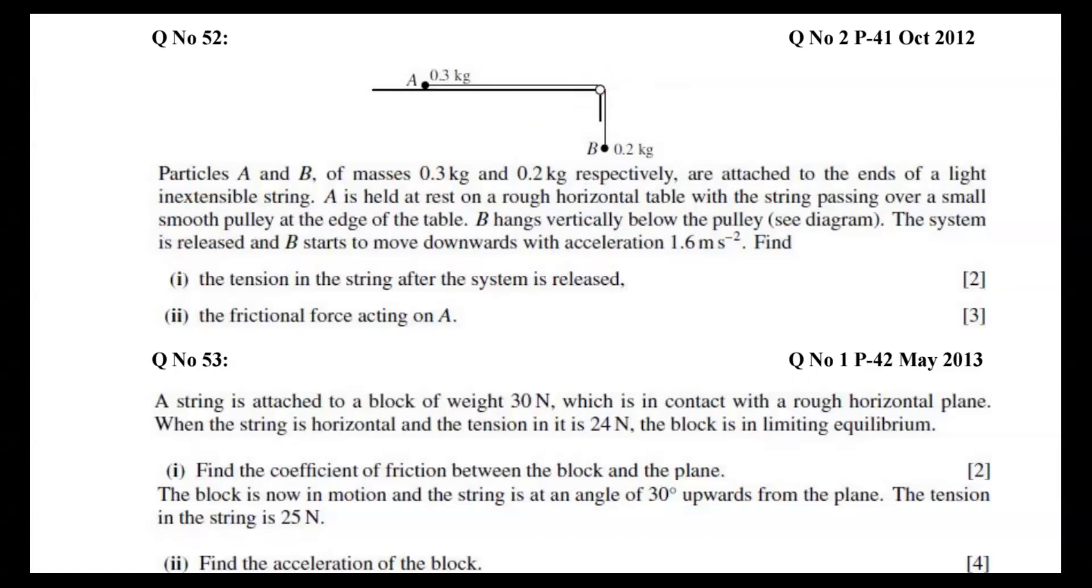Pulleys are always smooth, but realistically they're never smooth in common life. We will assume pulleys are always smooth. So B starts to move downwards - B is falling downwards with acceleration 1.6. We have to find tension in the string after releasing, after motion starts.